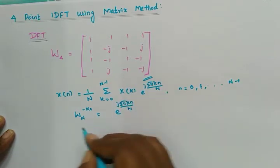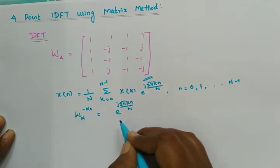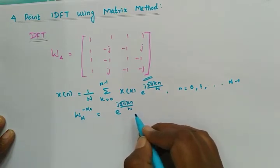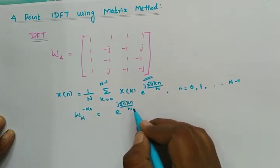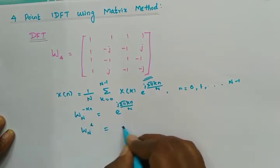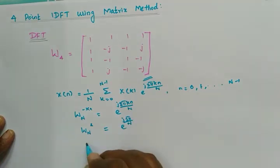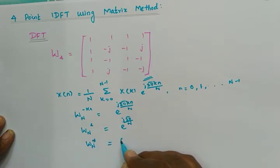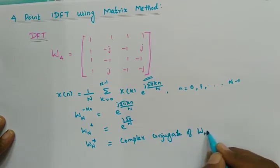For DFT we write W_N^(kn) = e^(−j2πkn/N). Since it is IDFT, we write W_N^(−kn) = e^(j2πkn/N), or we can write this as W_N*, which is called the complex conjugate of W_N.